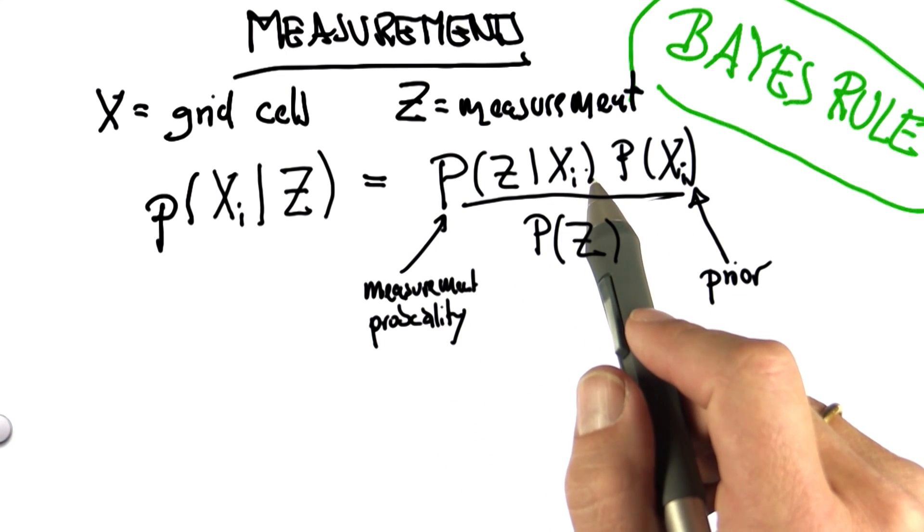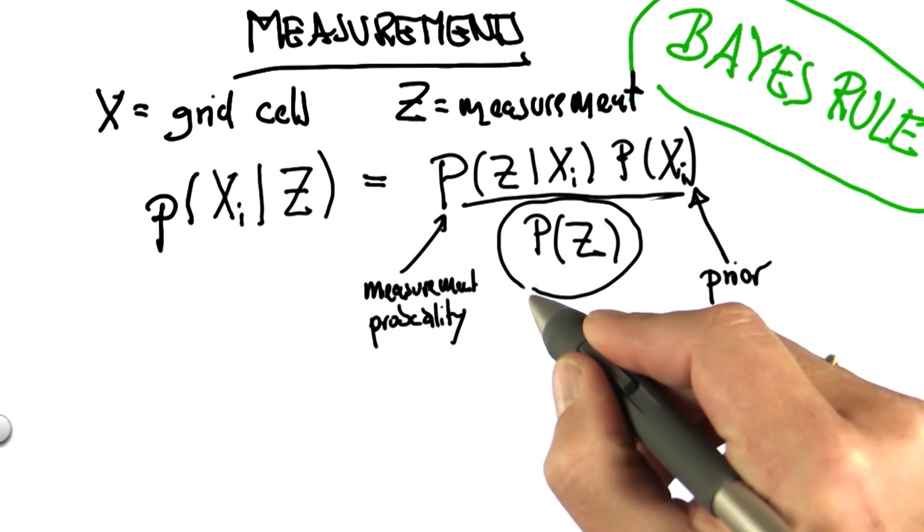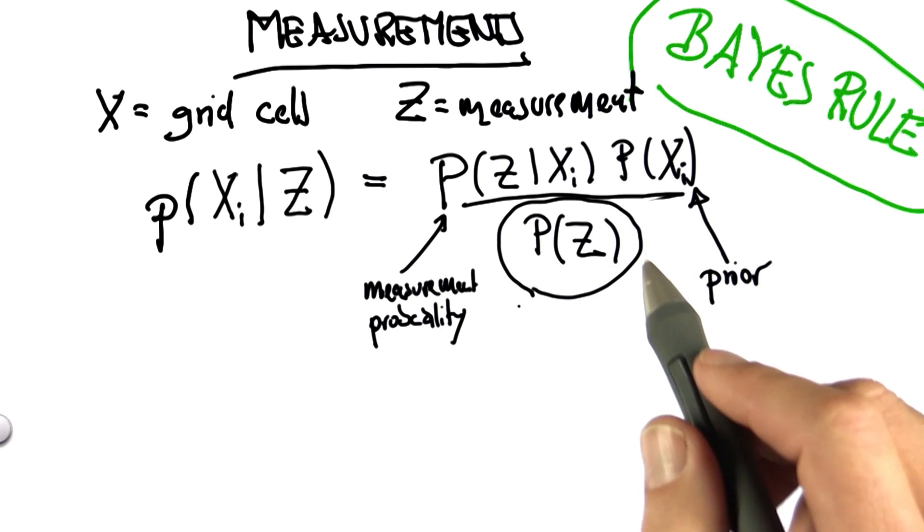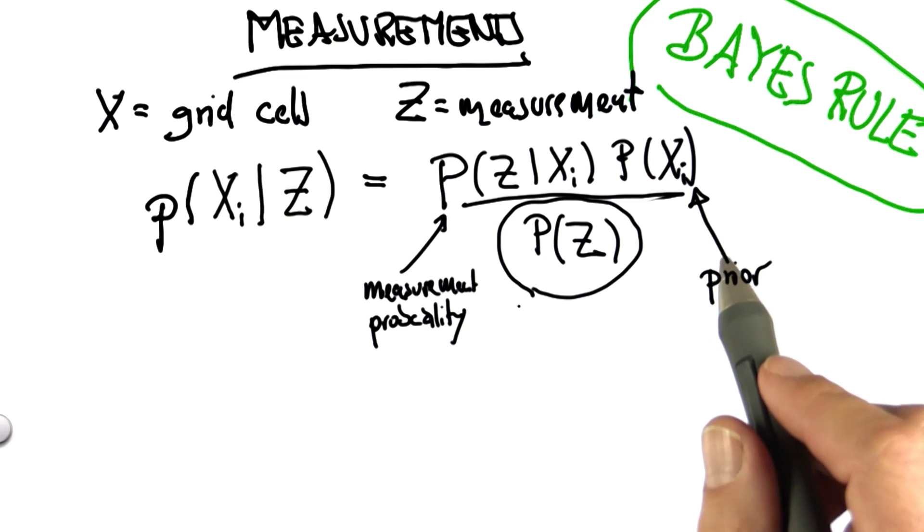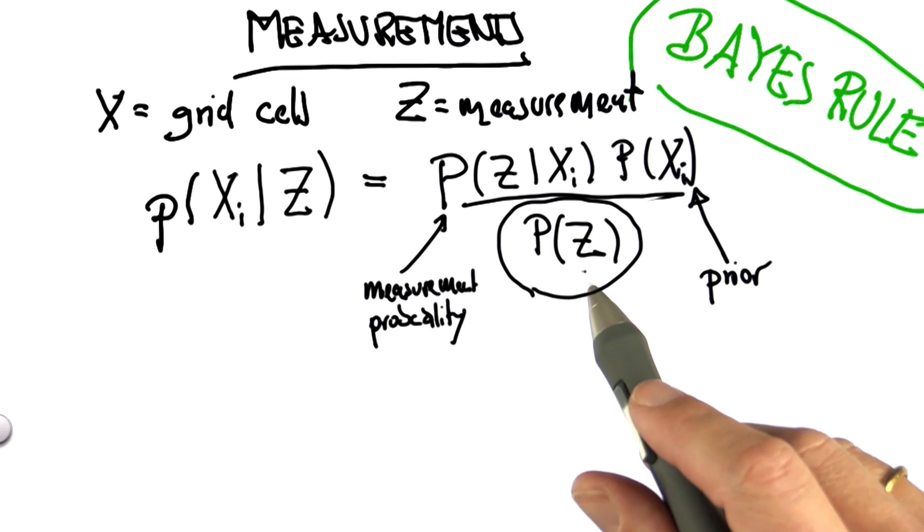But let's not confuse ourselves. The easiest way to understand what's going on is to realize that this is a function that assigns to each grid cell a number, and the p(z) doesn't have the grid cell as an index. So no matter what grid cell we consider, the p(z) is the same.